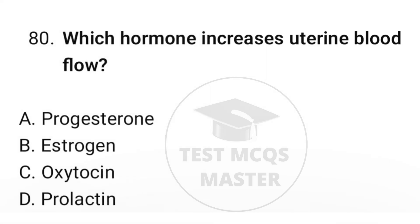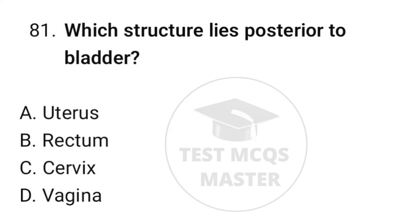Question number eighty: which hormone increases uterine blood flow? The correct option is B, estrogen. Question number eighty-one: which structure lies posterior to the bladder? The correct option is A, uterus.